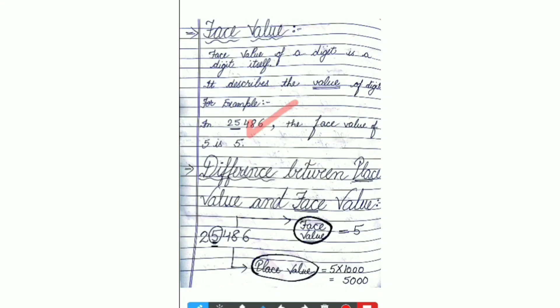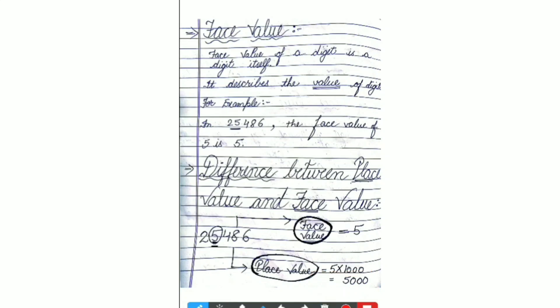Now, let's look at the difference between place value and face value. If we want to calculate the face value of 5, the value will be 5 only. But if we want to know the place value, we must refer to the place value chart. Speaking together: 1, 10, 100, 1000 — 5 is at the 1000 place, so we multiply by 1000 and the answer is 5000. I think place value and face value are now clear to you.